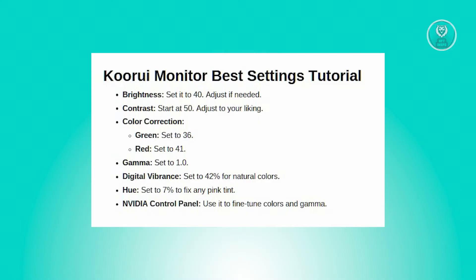Now contrast adjusts the differences between the light and dark areas of the image. In the same menu, find the contrast settings and set it back to the default value, which is often around 50 as well. Refer to the manual if you're uncertain. Using the default values for brightness and contrast is the best setting you can set for these two values.